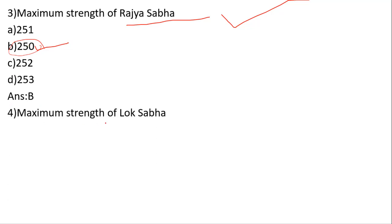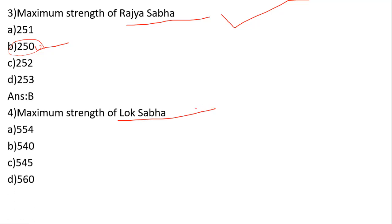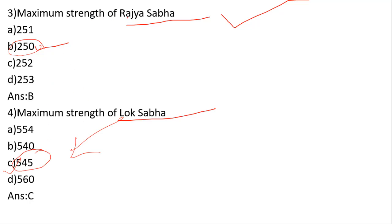Maximum strength of Lok Sabha: options are 544, 540, 545, 560. The correct answer is C — 545. So Lok Sabha maximum strength is 545 and Rajya Sabha is 250.